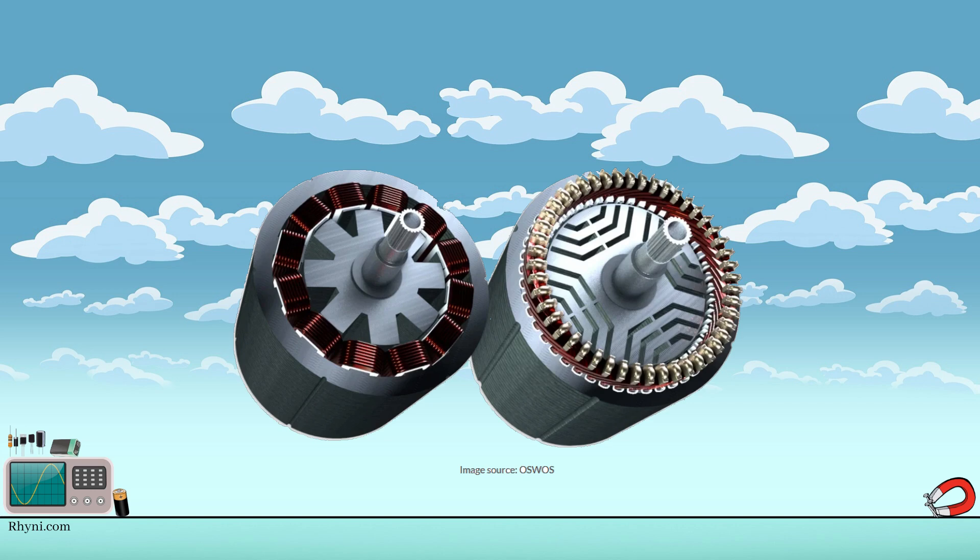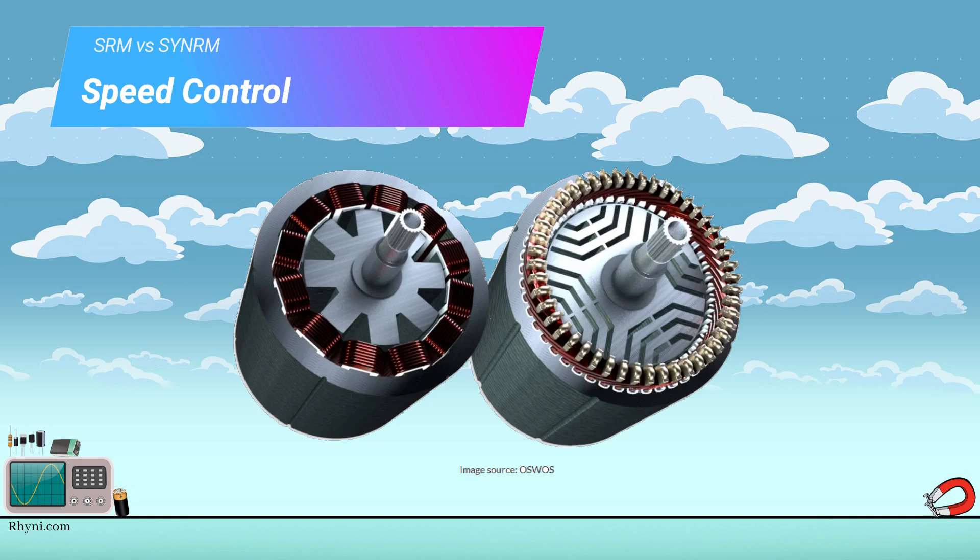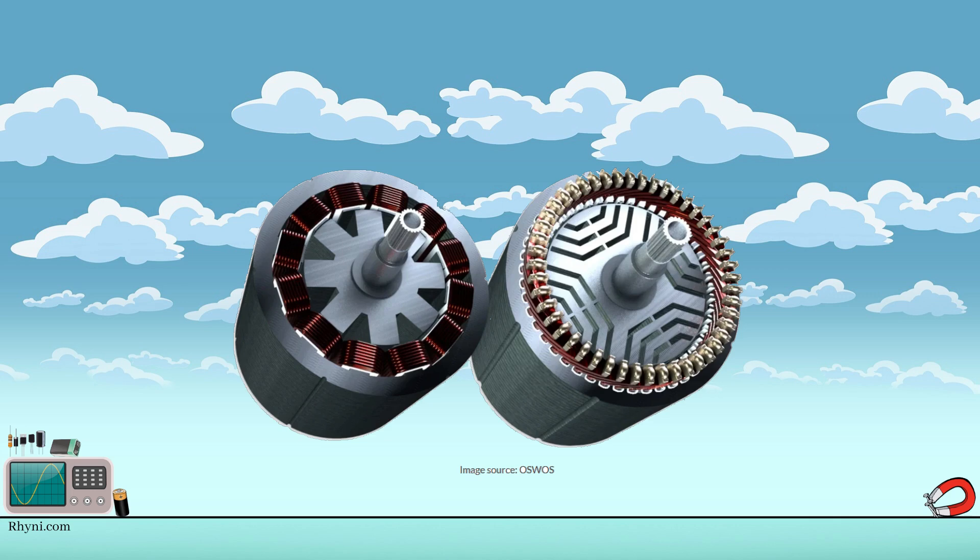Speed control. The synchronous reluctance motor has better speed control, making it suitable for applications where precise speed control is required. In contrast, the switched reluctance motor has limited but simple and cost-effective speed control solutions.